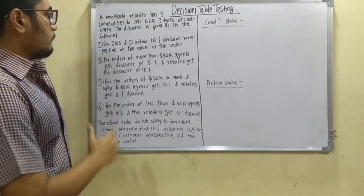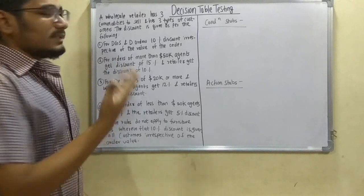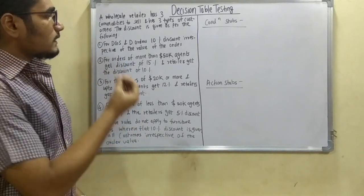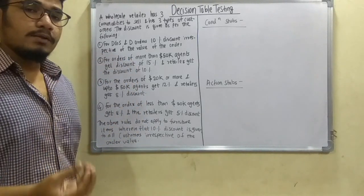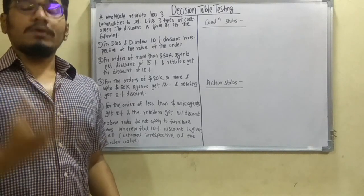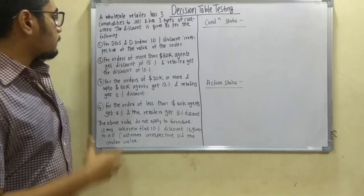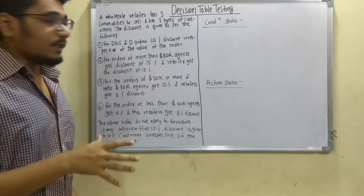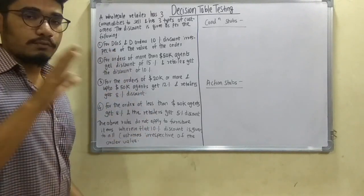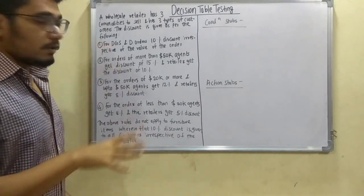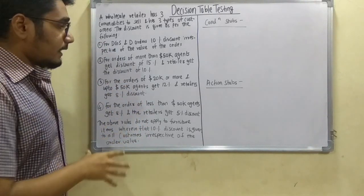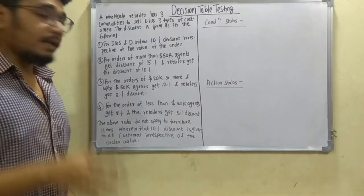First, for DGS&D orders — DGS&D could be some entity or customer — they give 10% discount irrespective of the value of the order. Next, for orders of more than $50K, agents get a discount of 15% and retailers get 10%. For orders of $20K or more and up to $50K, agents get 12% and retailers get 8% discount.